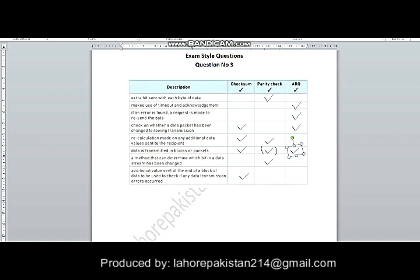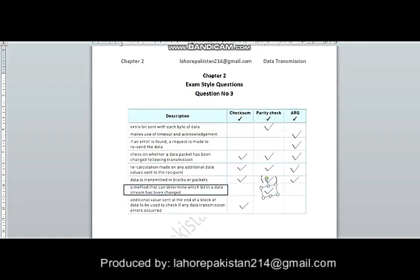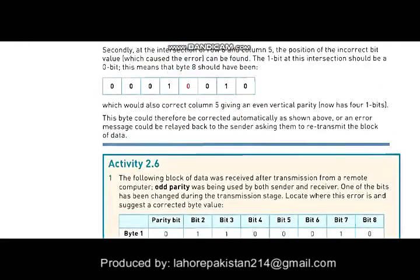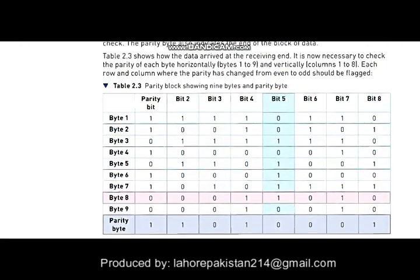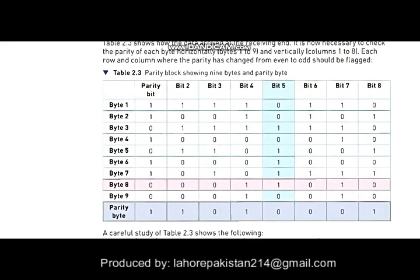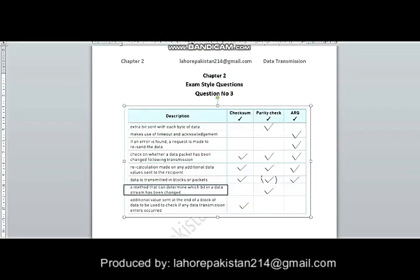In the case of ARQ, the data is of course in the form of blocks or packets. Now comes the sixth part: a method that can determine which data in a bit stream has been changed. You can see from your book — this diagram explains it well. There was a decision of even parity between the sender and receiver, but bit 5 has 1, 2, 3, 4, 5 — an odd number of ones — and bit 8 also has an odd number of ones. So the bit at the intersection has a problem, and this can be checked through parity check.